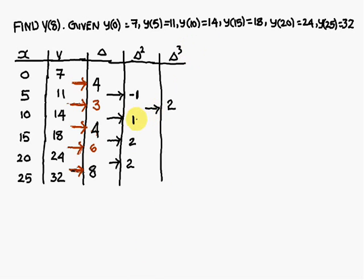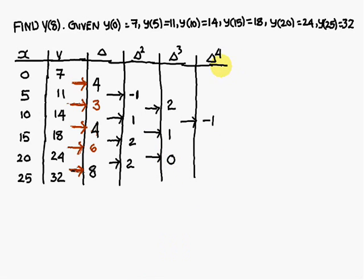For the third differences: 1 minus (−1) = 1 + 1 = 2. Next, 2 minus 1 is +1. Then 2 minus 2 is 0. For the fourth differences: 1 minus 2 is −1. And 0 minus 1 is −1. For the fifth difference: −1 minus (−1) = −1 + 1 = 0.